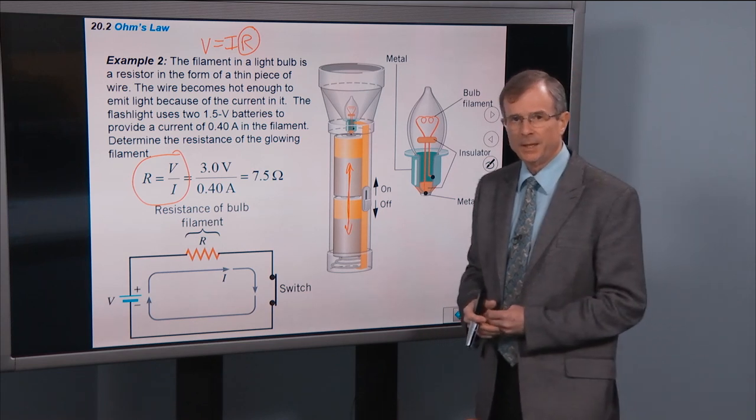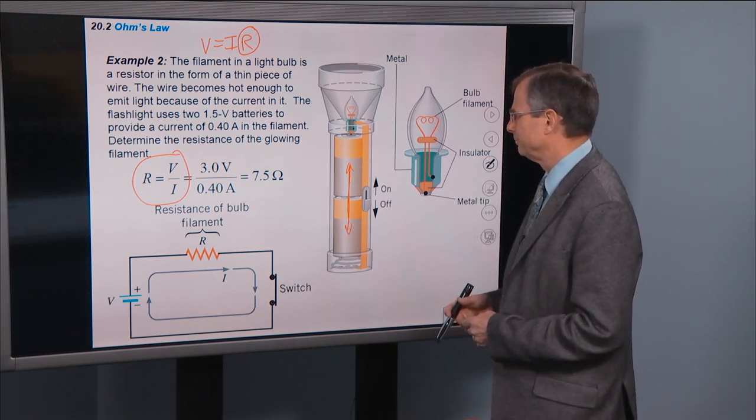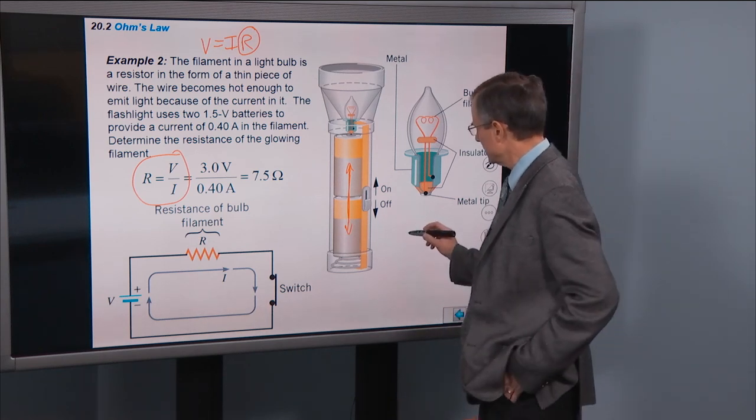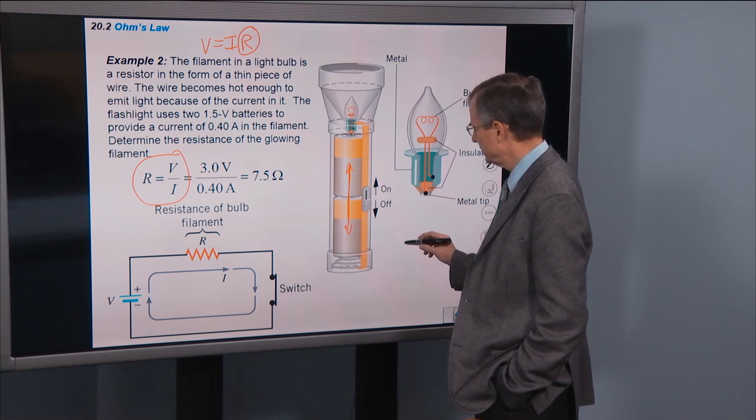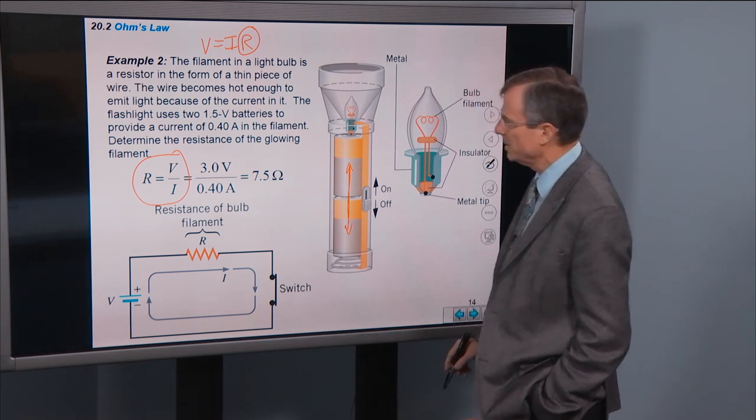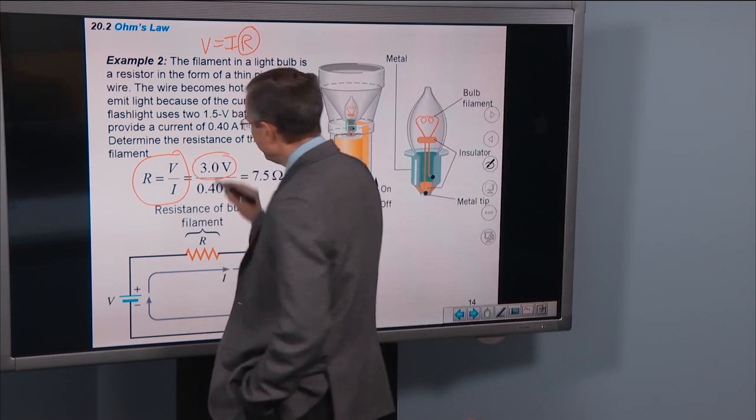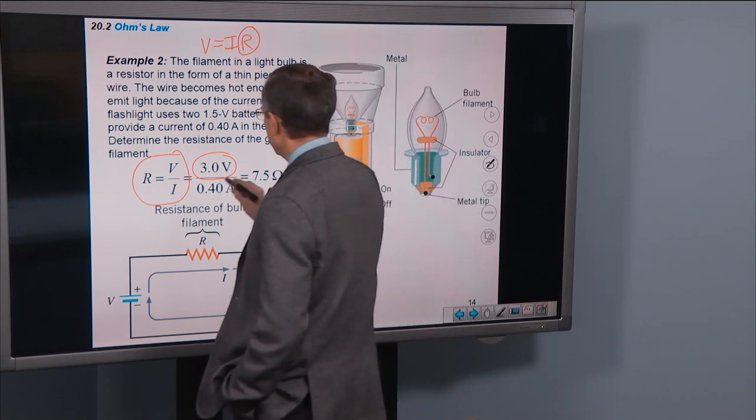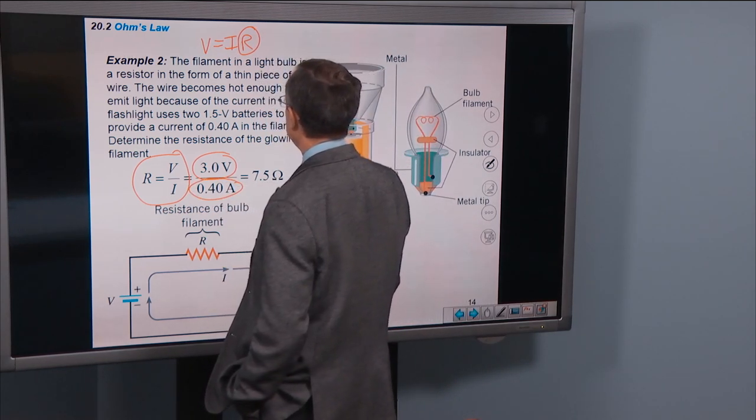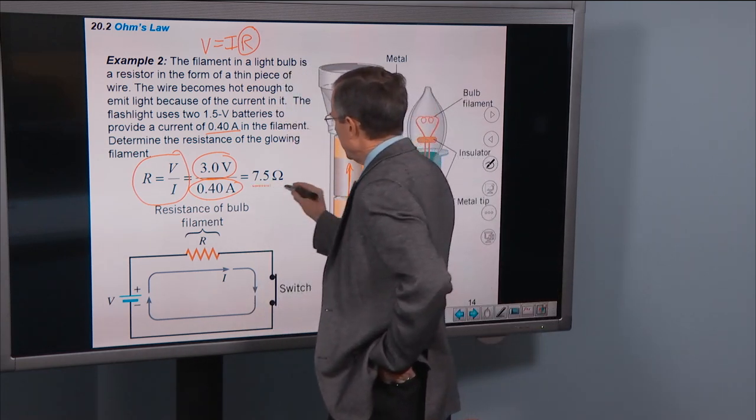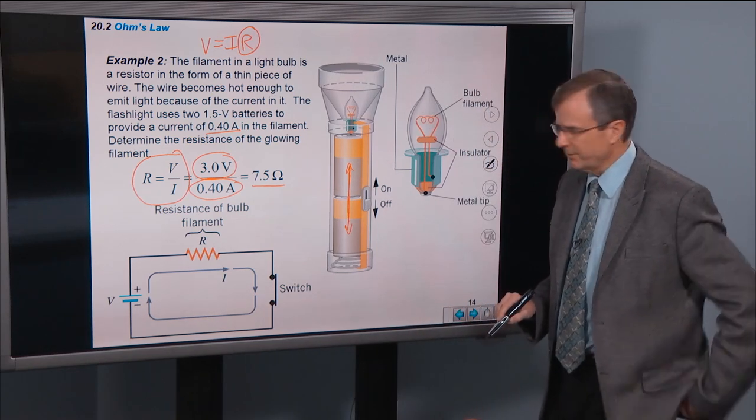Six times one and a half is nine. Yes. And two times one and a half is three. Yeah, exactly. So one and a half volts plus one and a half volts is three volts. And then the current, we're told, is 0.4 amps. And the answer that we get out of this deal is 7.5 ohms.